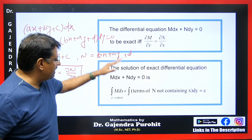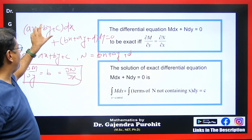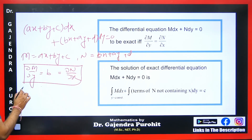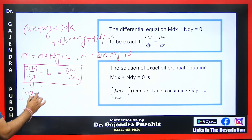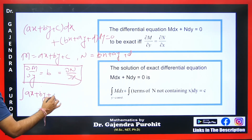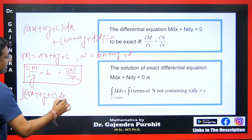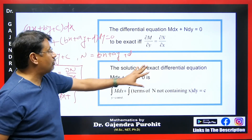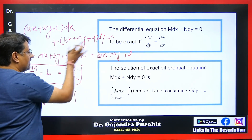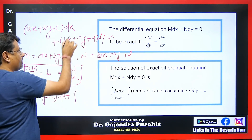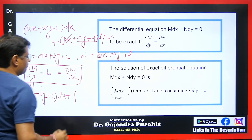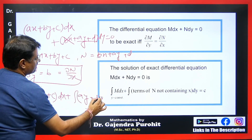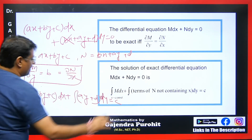If this differential equation is exact, we can solve it as follows. First, integrate the part along with dx, treating y as a constant. So (ax + by + c)dx is integrated directly, and then we integrate the terms in N that do not contain x — removing the bx term — leaving only those terms with dy, and set equal to constant c.